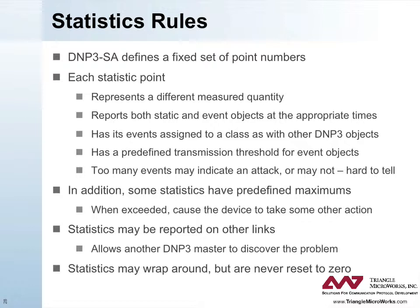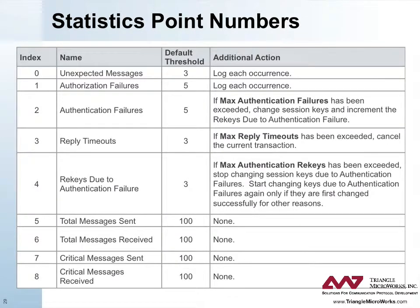Statistic points also have a predefined transmission threshold for event objects because too many events may — but does not necessarily — indicate that an attack is underway. Some statistics have predefined maximums that when exceeded cause the device to take some other action. Statistics may be reported on other links, which allows another DNP3 master to discover the problem. Note that statistics counters may wrap, but they are never reset to zero. This slide and the next provide a list of statistic point numbers along with the default threshold and additional actions that may be taken.